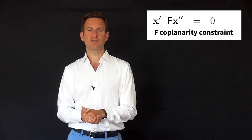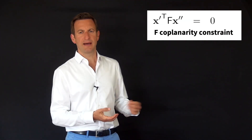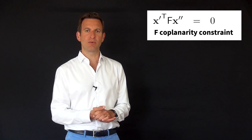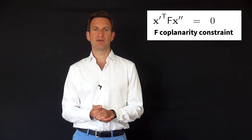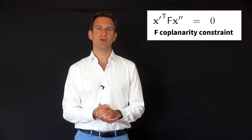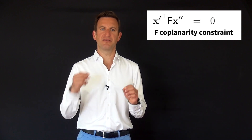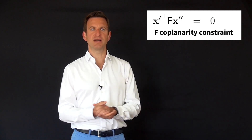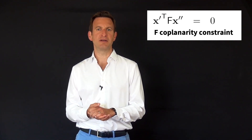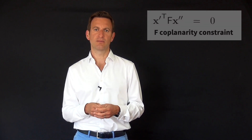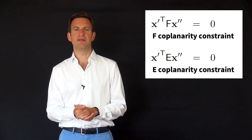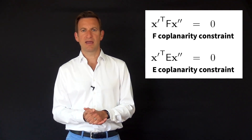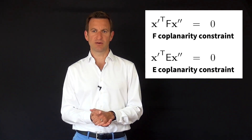The coplanarity constraint is expressed in this simple form. X is a point in image number one, X' is a point in image number two, and we assume these are the pixel coordinates of the same point projected into both images. We can do the same for the essential matrix, except that we then have our points in the camera coordinate system, not in the pixel coordinate system.